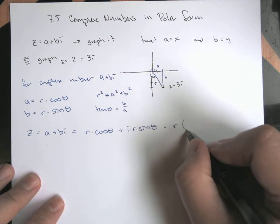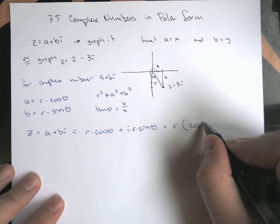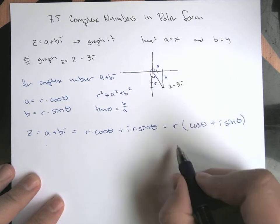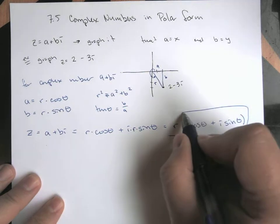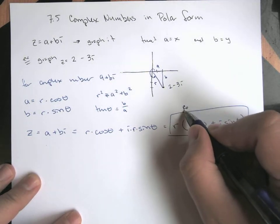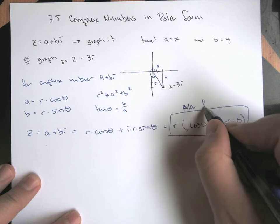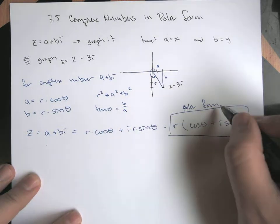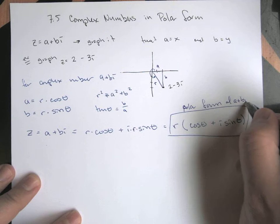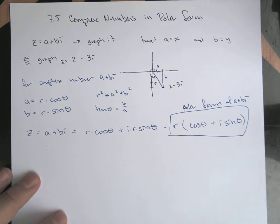And so you can kind of bring this r out in front, and this becomes cosine theta plus i times the sine of theta, and so instead of writing a plus bi, I could write a polar version, a polar form of this complex number of a plus bi.